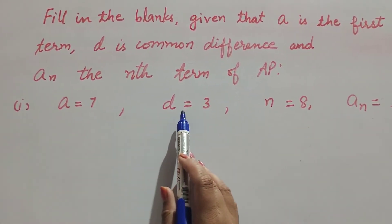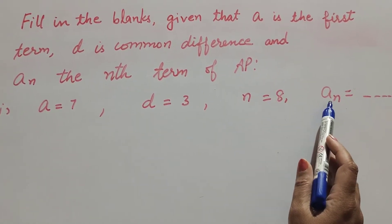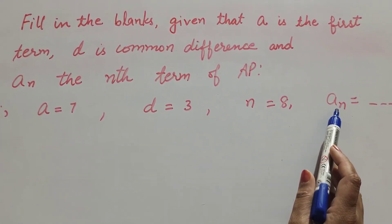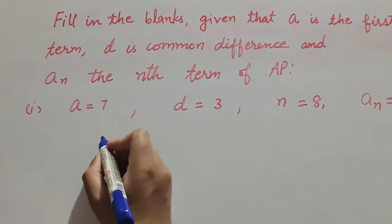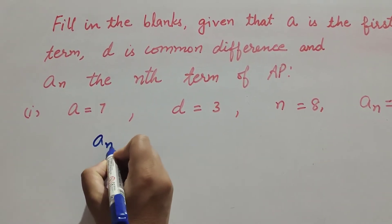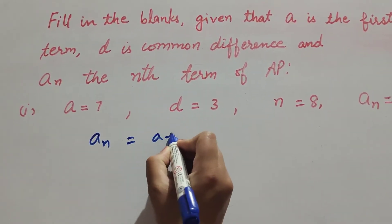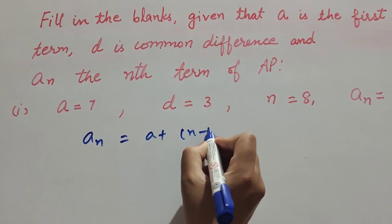a is the first term, d is common difference, n is equal to total number of terms. So we know the formula to find the nth term of the AP: it is a_n is equal to a plus (n minus 1) d.